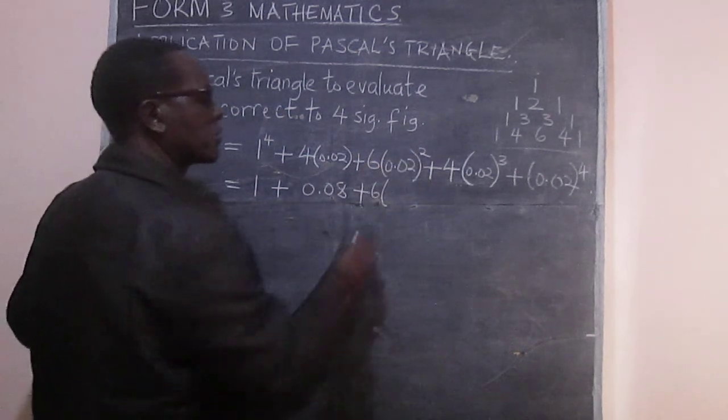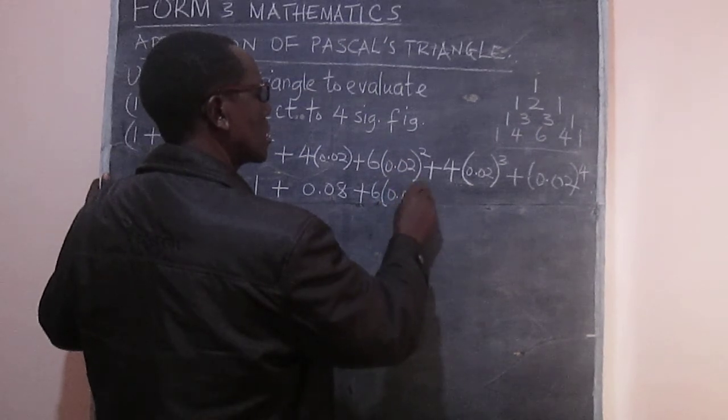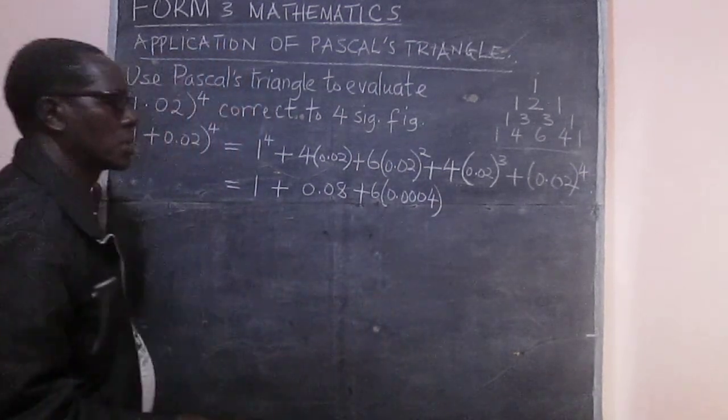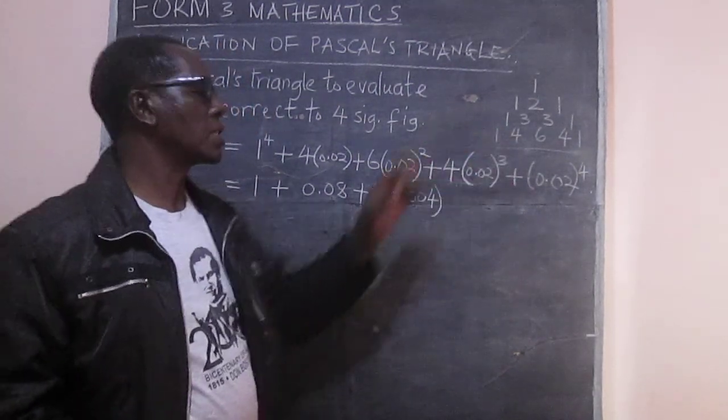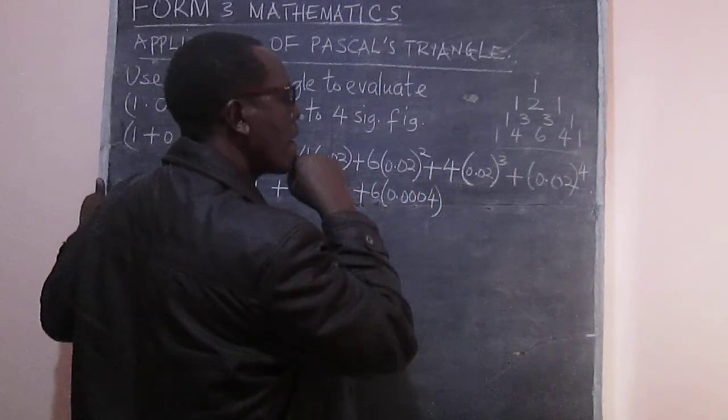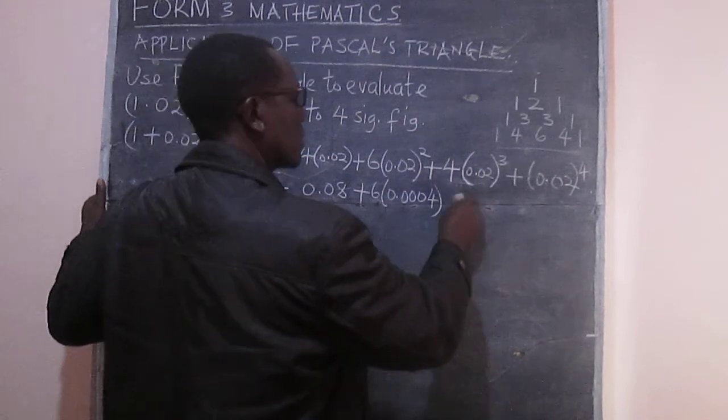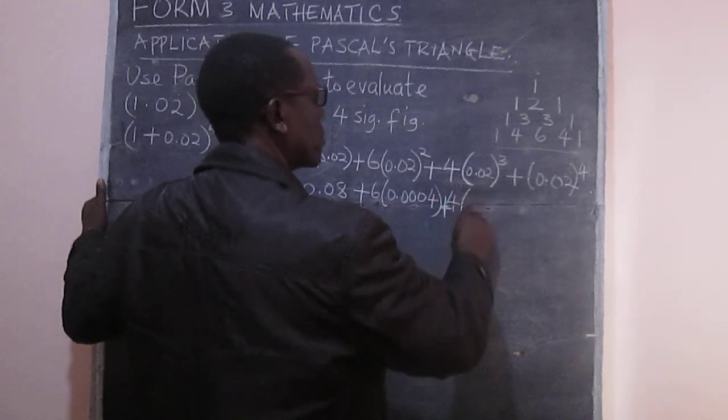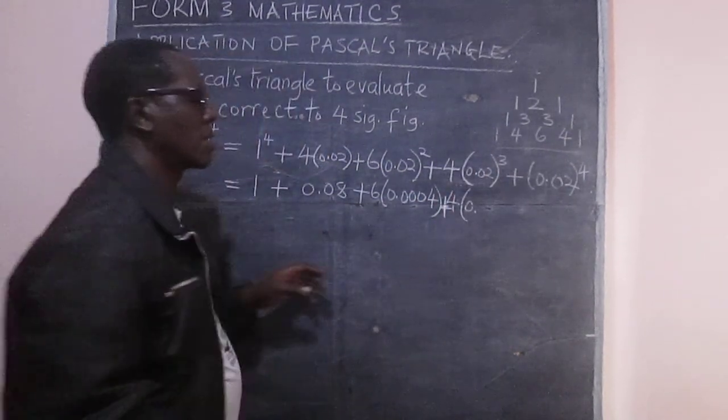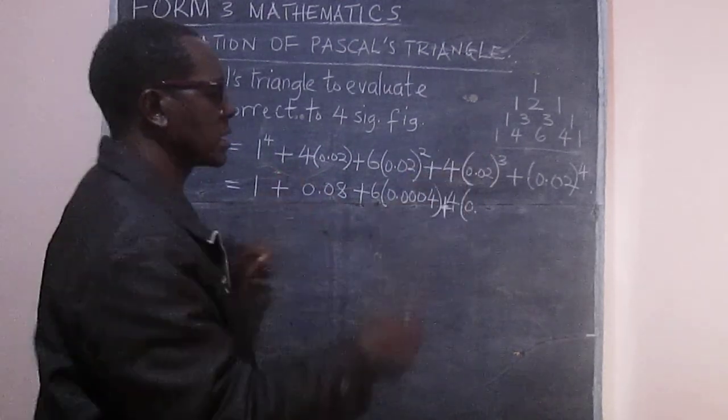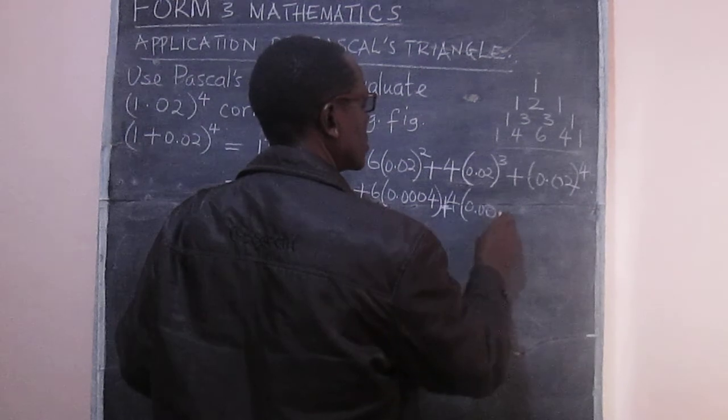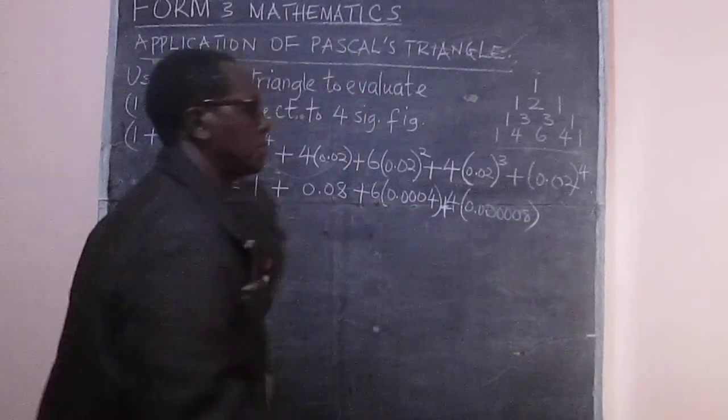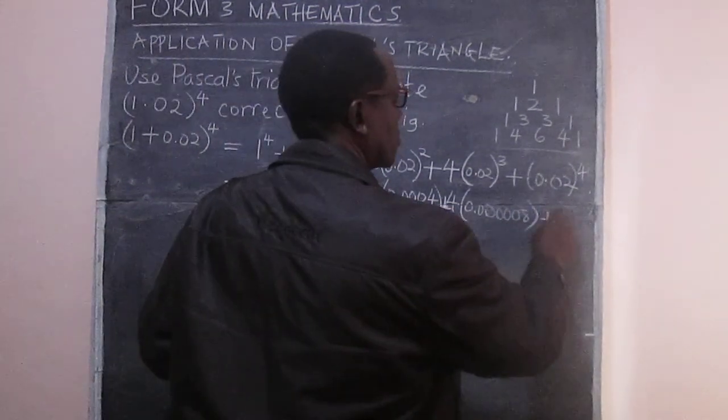That's 6 multiplied by this, correct to 4 decimal places. So we have 0.0024. And this is going to be 0.000032. Plus, there is a plus sign there. And then 4 into this is going to be 6 decimal places, therefore we have 0.000128. Plus now this last one.